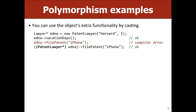A student asks: why wouldn't you just call Edna a patent lawyer from the start? That has to do with how she might actually be in a vector of employees. You might have some sort of if statement that checks what Edna's subclass is and then, if it's patent lawyer, calls file a patent. That would be more the situation you'd see casting — you wouldn't really see it looking exactly like this code.